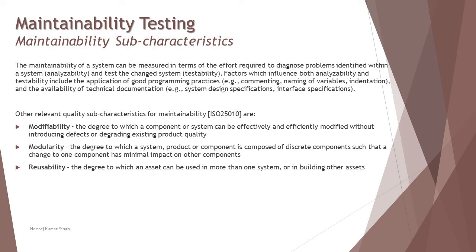The second sub-characteristic is testability of the changed system — if you modify anything, will it be testable tomorrow? Test cases should be written so they can be run and parameters like impact analysis defined. Traceability helps determine the number of test cases to run; without proper traceability, testability becomes a challenge. Factors influencing both analyzability and testability include application of good programming practices and availability of technical documentation showing how a change will impact the rest of the application.